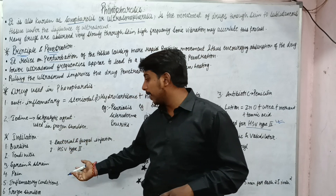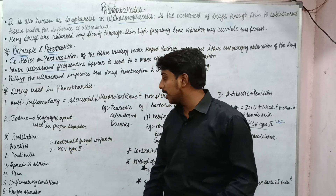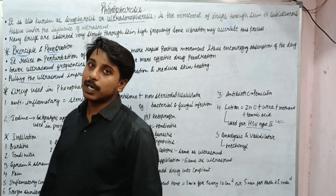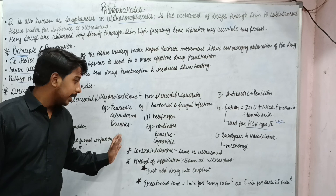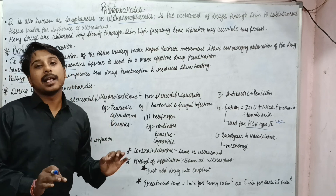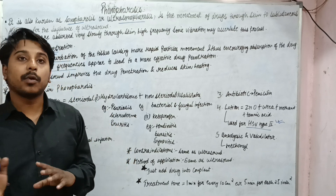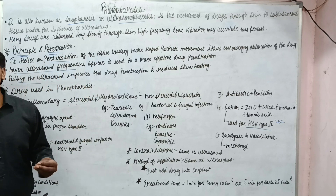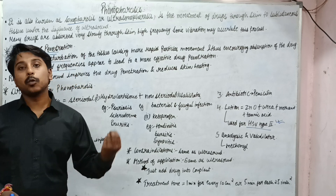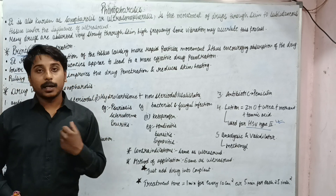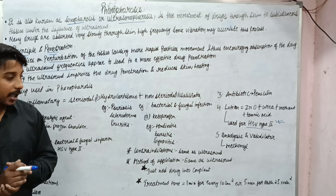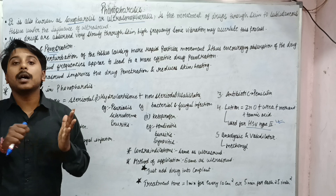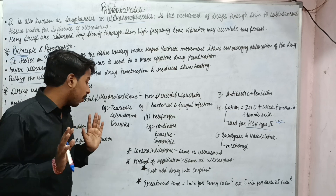Indications include bursitis, tendonitis, sprain and strain, pain, inflammatory conditions, frozen shoulder, and fungal infection. Contraindications are just the same as for ultrasound — each and everything is the same. Method of application is again purely similar to the general application in ultrasound, by the direct contact method. Here, we just need to add the drug and mix it into the coupling medium, then apply the ultrasound. The rest is all the same.